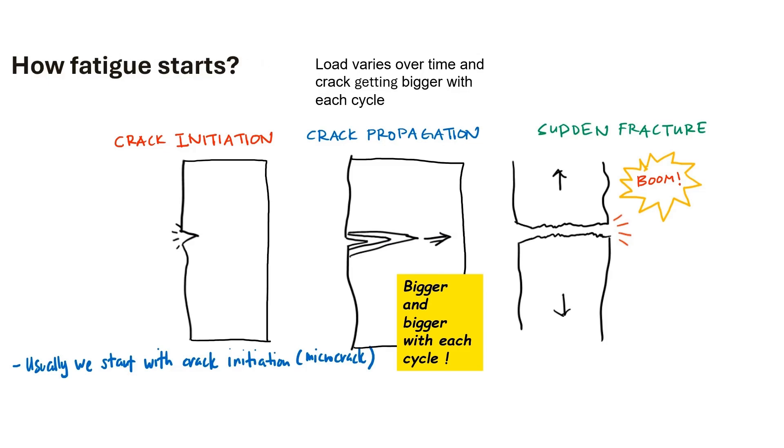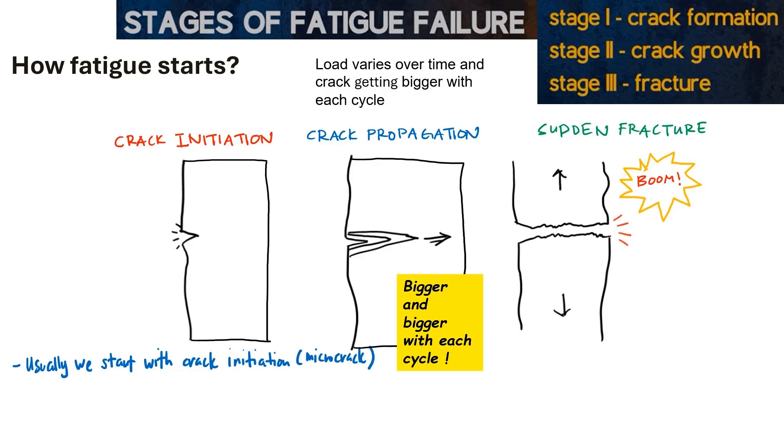So we can say that there are three stages involved in fatigue failure. The first one is where the crack formation will occur. And we have a second stage where the growth of the crack will happen. It will become bigger and bigger with each cycle. And the third one is when the fracture occurs.